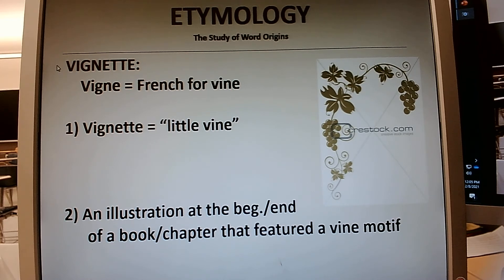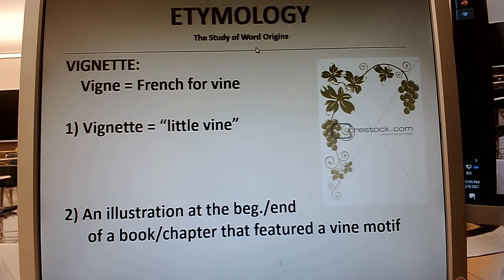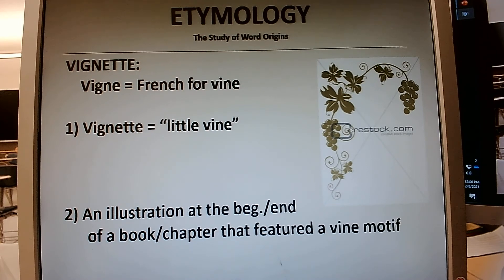The first thing I want to point out is this cool word: etymology. Etymology literally means the study of word origins or word histories — where they come from. The ending '-ology' means 'study of.' So biology is the study of living things, zoology is the study of zoo animals, and etymology is the study of word origins.